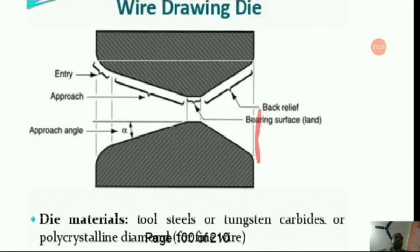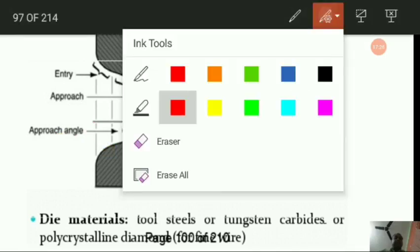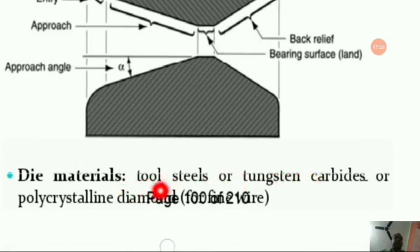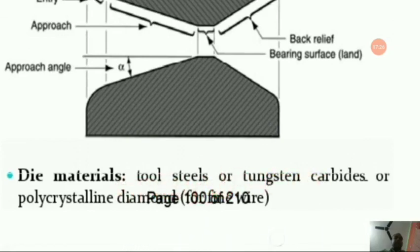Die materials generally used for the wire drawing process are tool steels, tungsten carbides, or polycrystalline diamond.